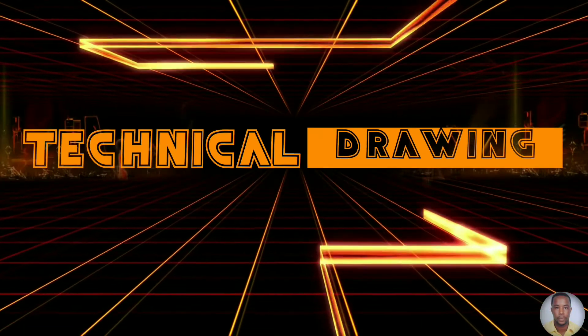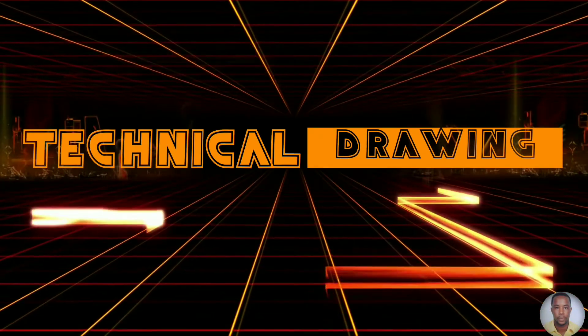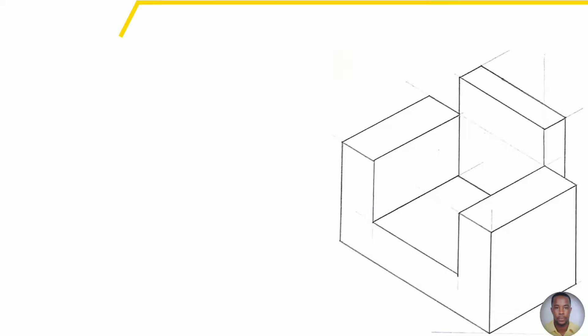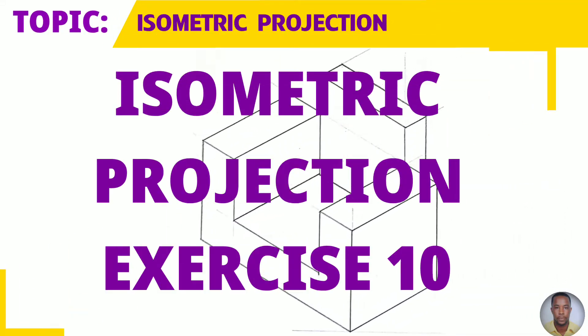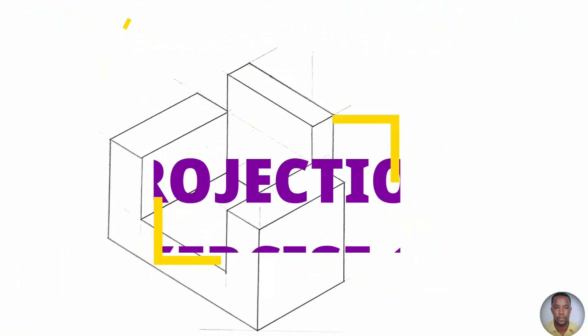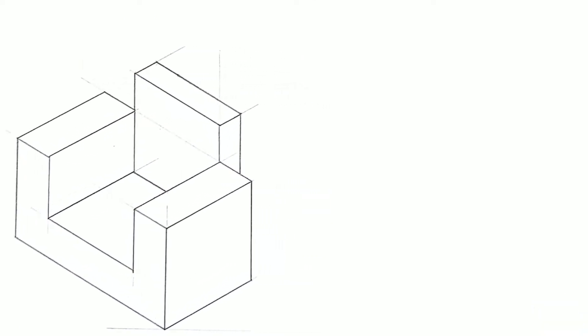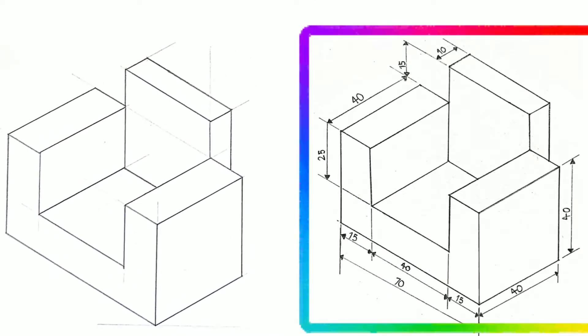Greetings everyone, Sir Morgan here from the Technical Department. From the topic isometric projection, you will draw your 10th isometric exercise today to the given dimensions now on your right. First draw a horizontal baseline and an isometric rectangle to the given dimensions.